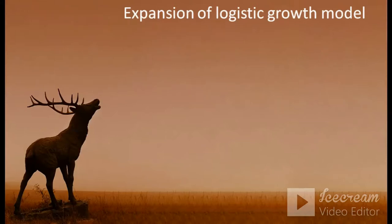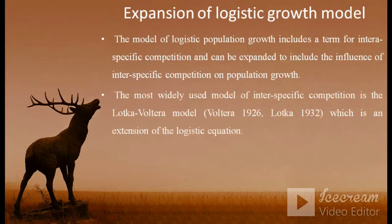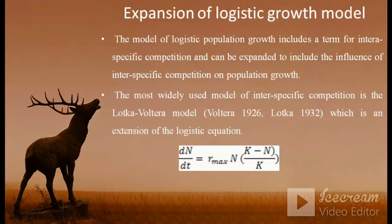Now, in my previous video I already explained the different types of growth curve. And if we expand the logistic growth model, the model of logistic population growth includes a term for intraspecific competition — that is, competition within the species — and can be expanded to include the influence of interspecific competition on population growth. The most widely used model of interspecific competition is the Lotka-Volterra model, which is an extension of the logistic equation. The logistic equation we already studied is: dN/dt = r_max × N × (K − N) / K.